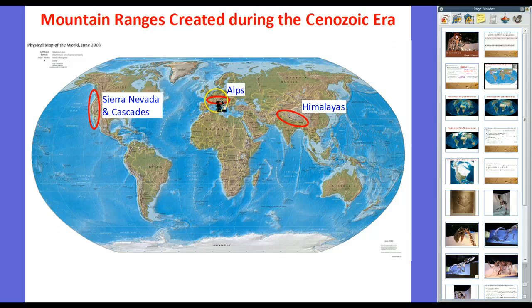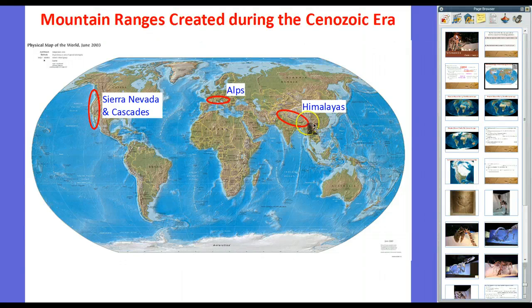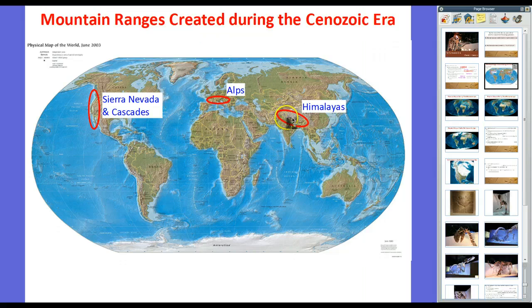The Alps right here, this mountain range in Central Europe, southern part of Germany, northern part of Italy, throughout Austria and Liechtenstein, and into Switzerland, tiny bit into France, and then also into Hungary and down south in Slovenia. Then we have the Himalayas. That's where India is running into Asia, like Mount Everest is in the Himalayas. So is K2, the two largest mountains in the world.